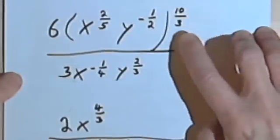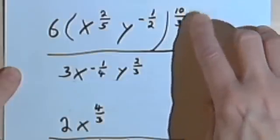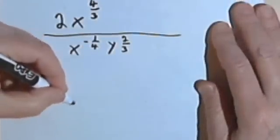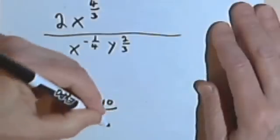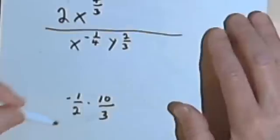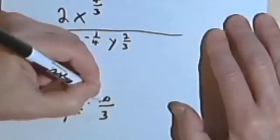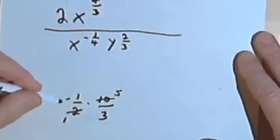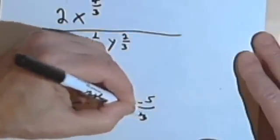I've also got to deal with y to the negative 1/2 raised to the 10/3 power. I've got to multiply negative 1/2 times 10/3. Once again, I'm going to simplify this before I multiply. I can divide the first denominator by 2, giving me a 1, and the second numerator by 2, giving me a 5. Multiplying across: negative 1 times 5 is negative 5, and 1 times 3 is 3. So my exponent for y is going to be negative 5/3.